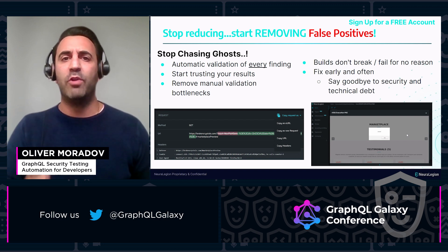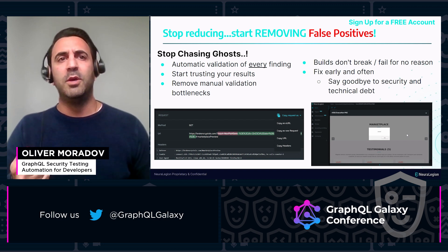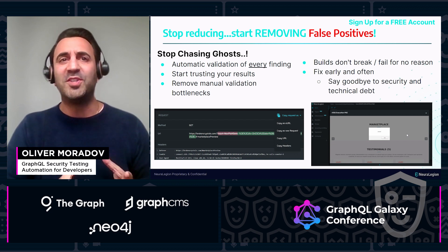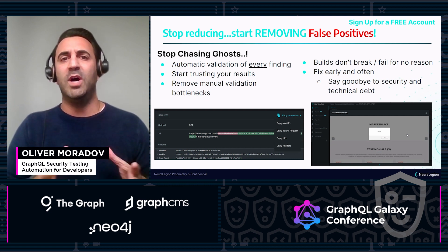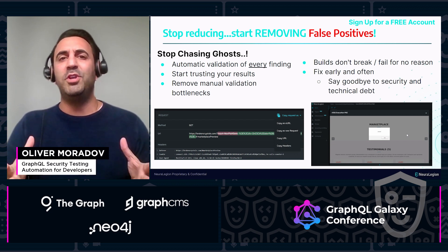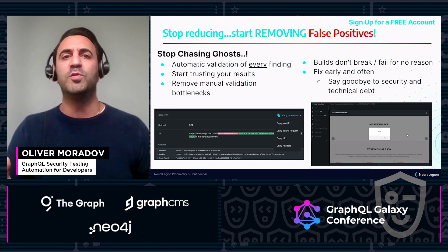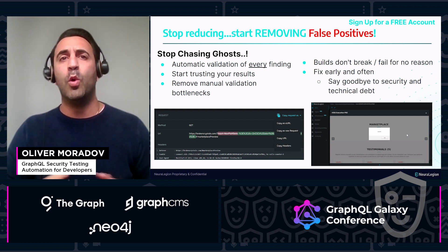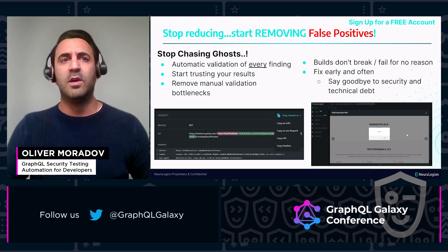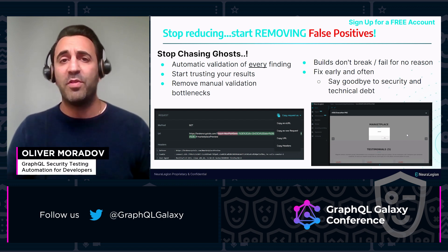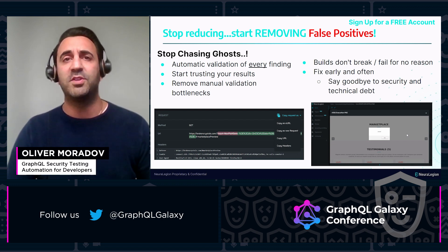Developers want to know real issues, not hyperbole. People always talk about reducing false positives. Well, here at Neuraligion, we like to talk about removing false positives altogether for you automatically, whether you're in a startup or a small organization, probably without a dedicated security team.